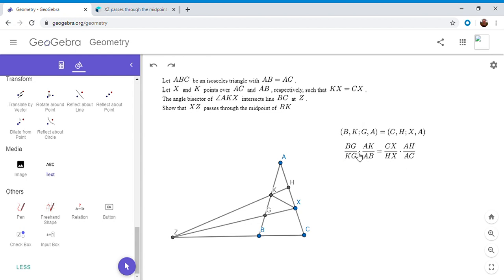From here, with the information we're given, believe it or not, the problem is already very close to solved. We're given that AB equals AC, it's an isosceles triangle. We're given that the angle bisector of AKX meets BC at Z, but I also made it meet the segment AX at point H.